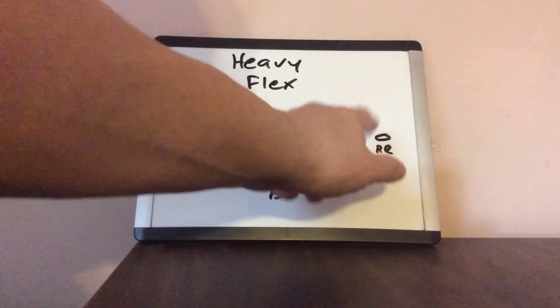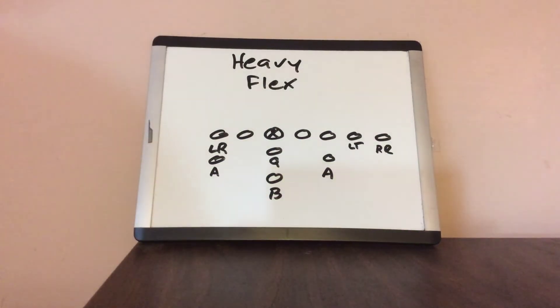Now, how does the defense adjust to this? Do they treat it as an unbalanced line? Do they simply slide over defensive backs? It creates a multitude of situations.